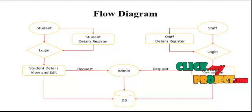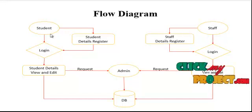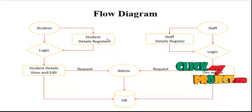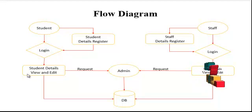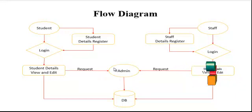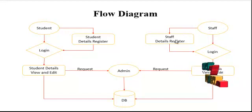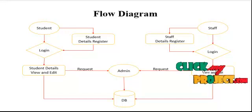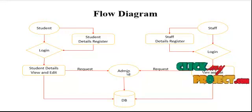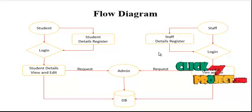This is a flow diagram of the web-based profile system. It includes a student and staff management profile updating system. Students register their details, then login to view all details, which are updated by the admin and stored in the database. Staff also register their details, get a username and password, login, and can view and edit their profiling. Requests go to the administrator and details are stored in the database, maintained by the administrator.